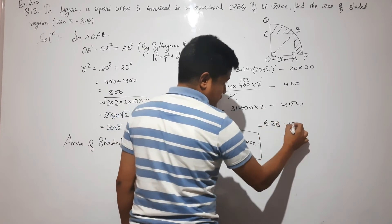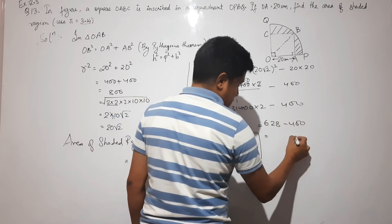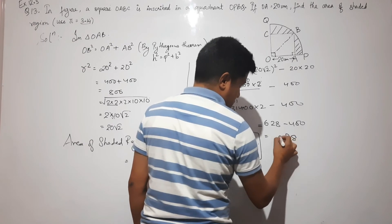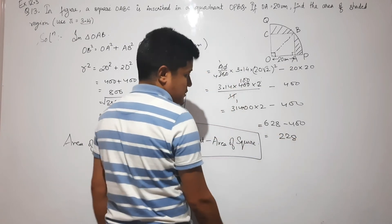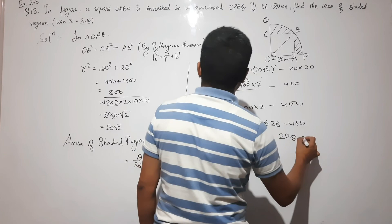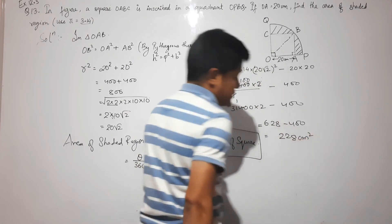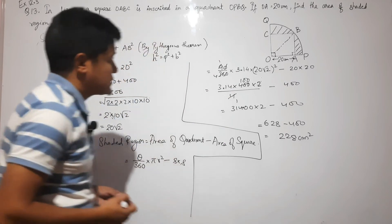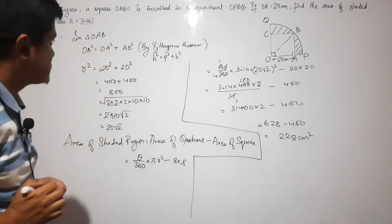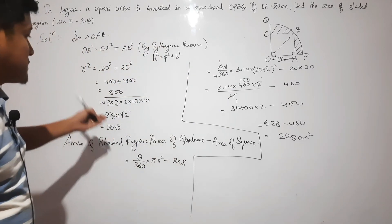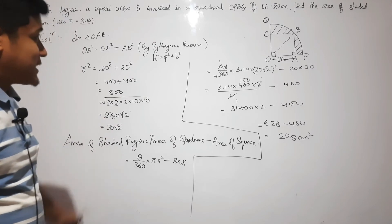This equals 228. The unit is centimeters squared, which is the area of your shaded region.